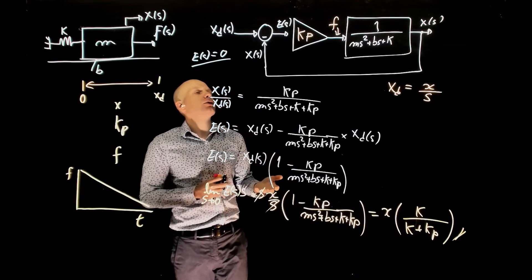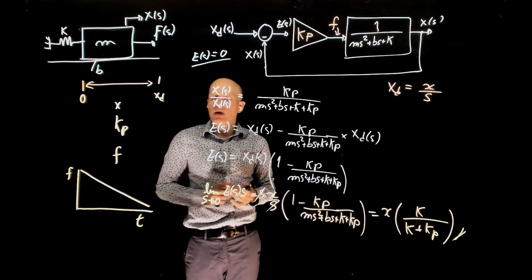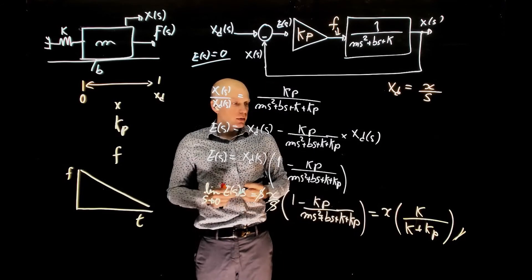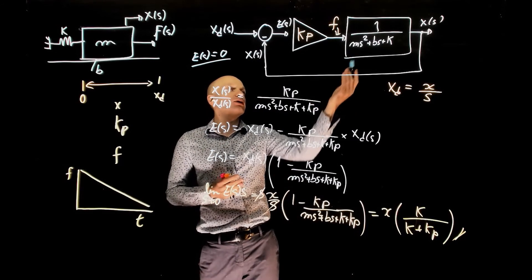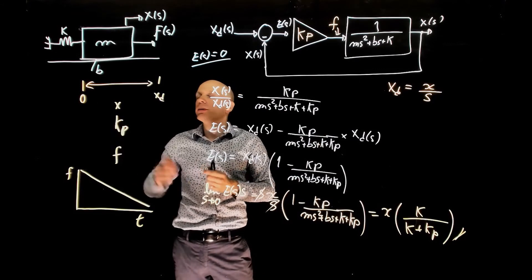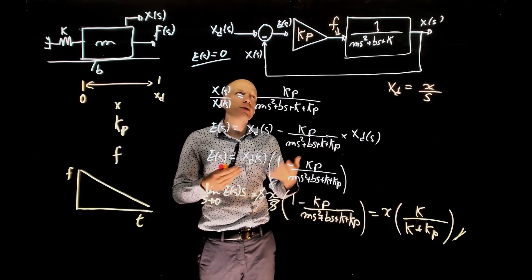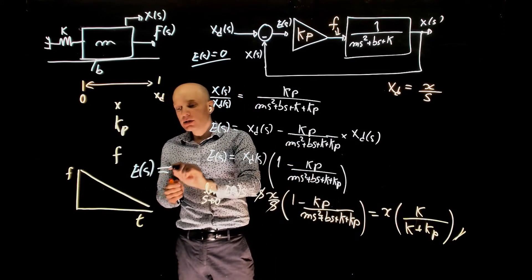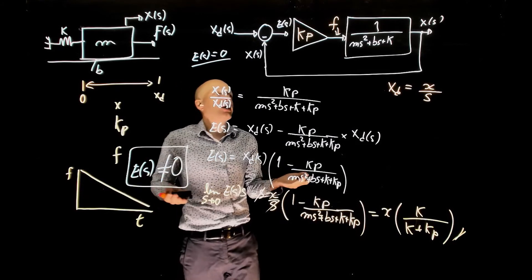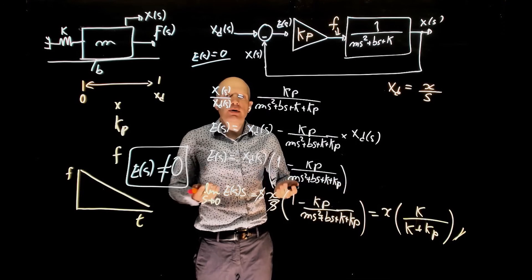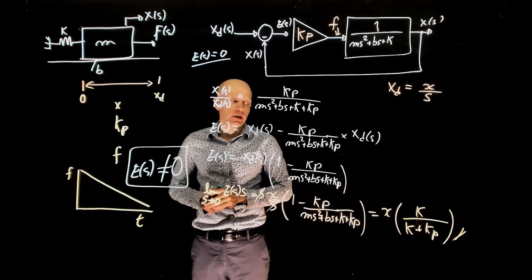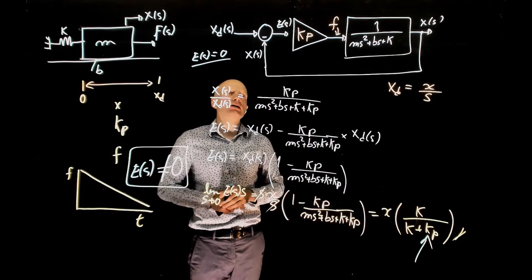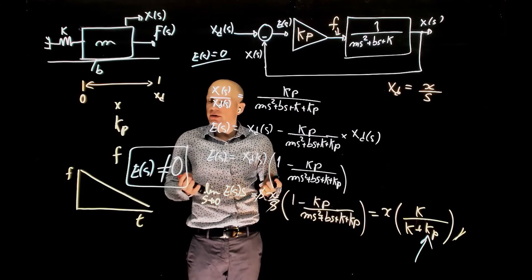If the steady state error is zero, there is no force applied to the mass. According to our control strategy, that can never happen — because when the error is zero, the force is zero, and the spring pulls the mass back. So in order for a force to be applied, the error must be nonzero. The steady state error can be minimized — the greater kp, the smaller the error — but it can never be zero.